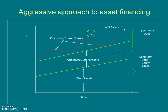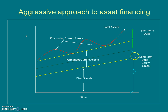In the aggressive financing approach, firms are very overconfident. They believe they will be able to arrange finance as and when assets are required. So they finance fixed assets and permanent current assets through long-term debt and equity capital, but also push a portion of permanent current assets plus all temporary assets into short-term debt financing.